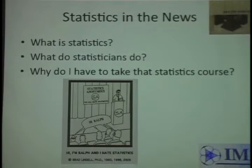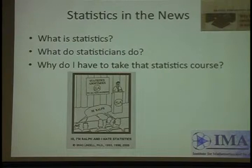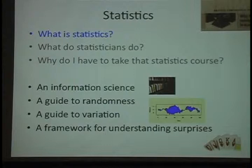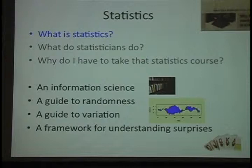What is statistics? It's an information science. It's a guide to randomness and variation. It's a framework for understanding surprises. You'll notice I haven't said it's a branch of mathematics — because it uses mathematics in these ways to study information and guide our understanding of randomness.